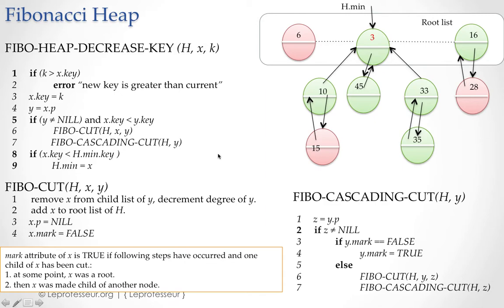And that history is basically the mark attribute of a node is true if these two steps have occurred: at some point X was a root, and then after that it was made a child of another node, and also that child X has been cut. That's a bit tricky to understand but remember these properties.